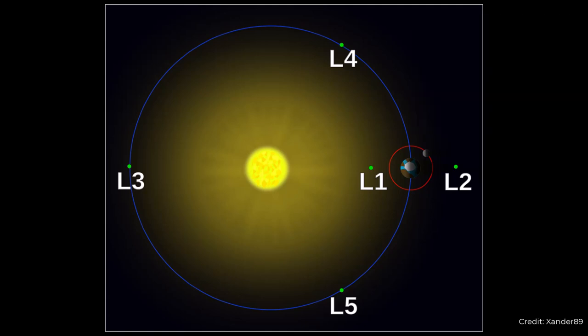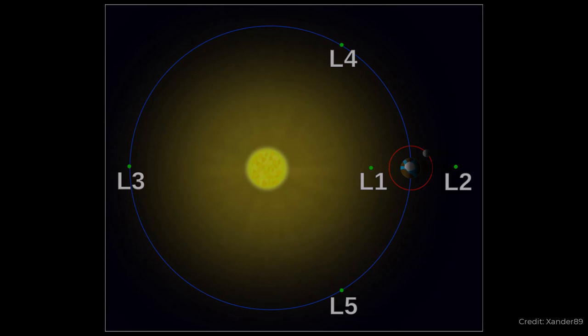This means things that orbit at or near the Lagrange points have almost no risk of crashing into the sun or the planet, making them remain at the same relative point for a long time.